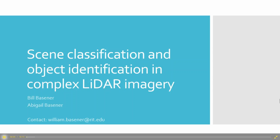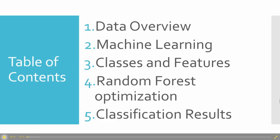We're going to talk about scene classification and object identification in complex LiDAR imagery. Here's our table of contents: first we'll talk about our data, then what machine learning is, and Abigail will do an overview of a couple of machine learning algorithms at a high level. Then we'll talk about the classes and features we use for our test, and the machine learning algorithm we're focusing on is a random forest.